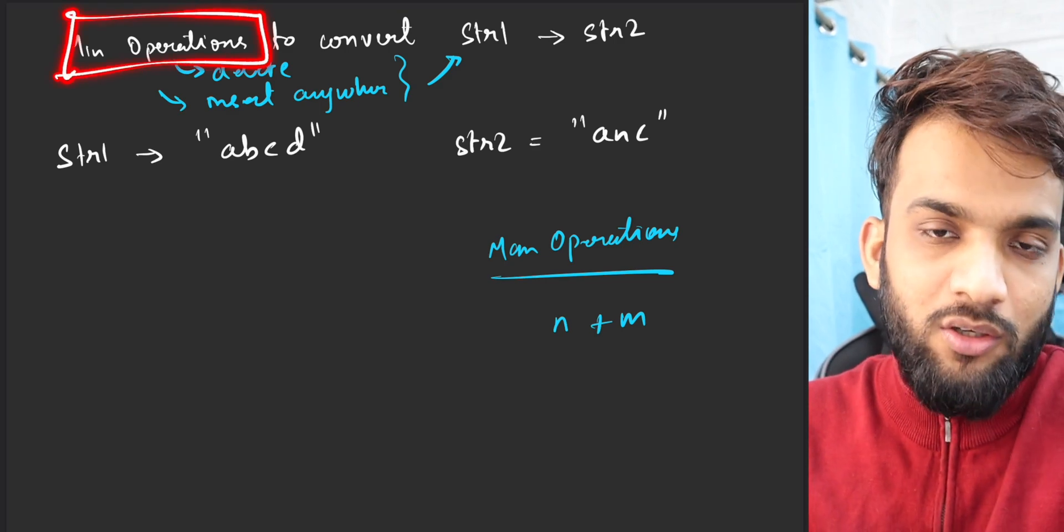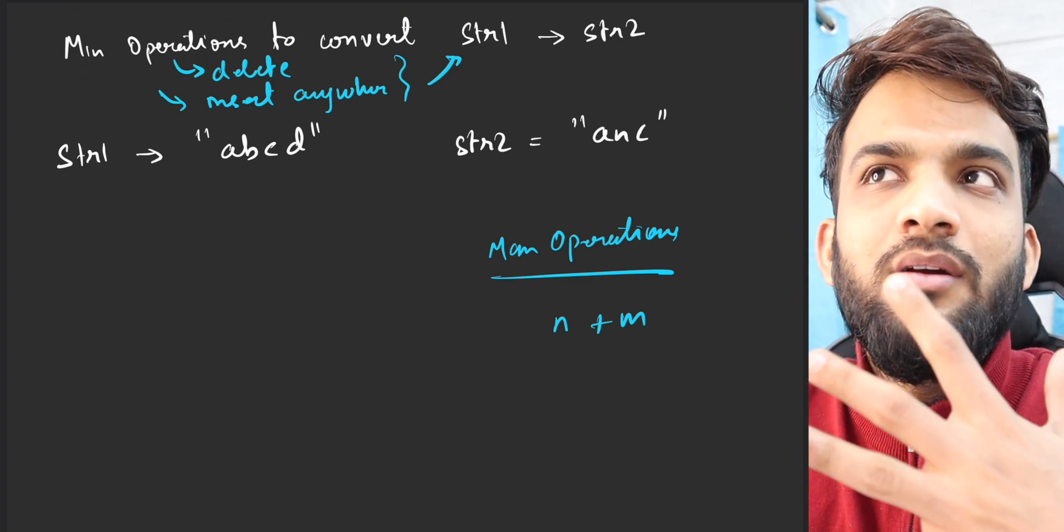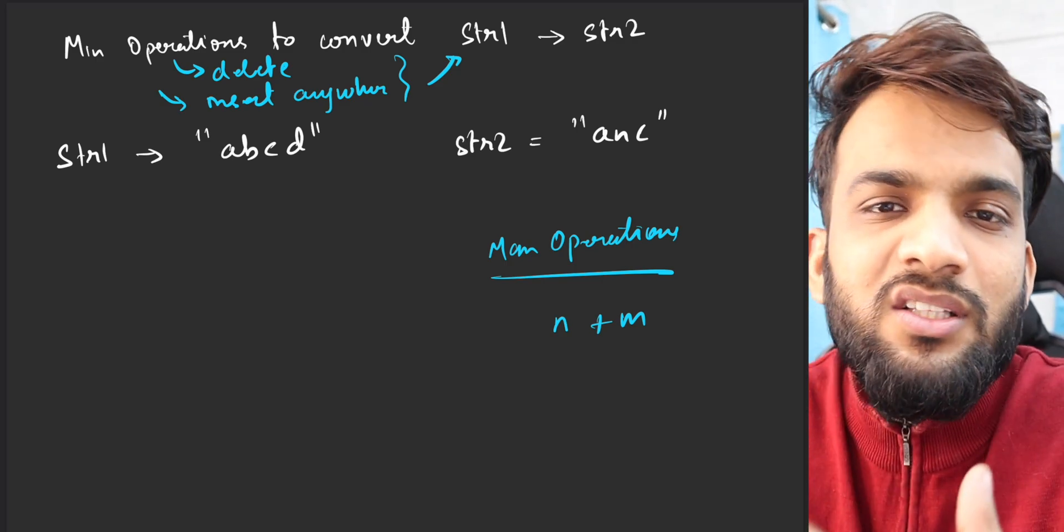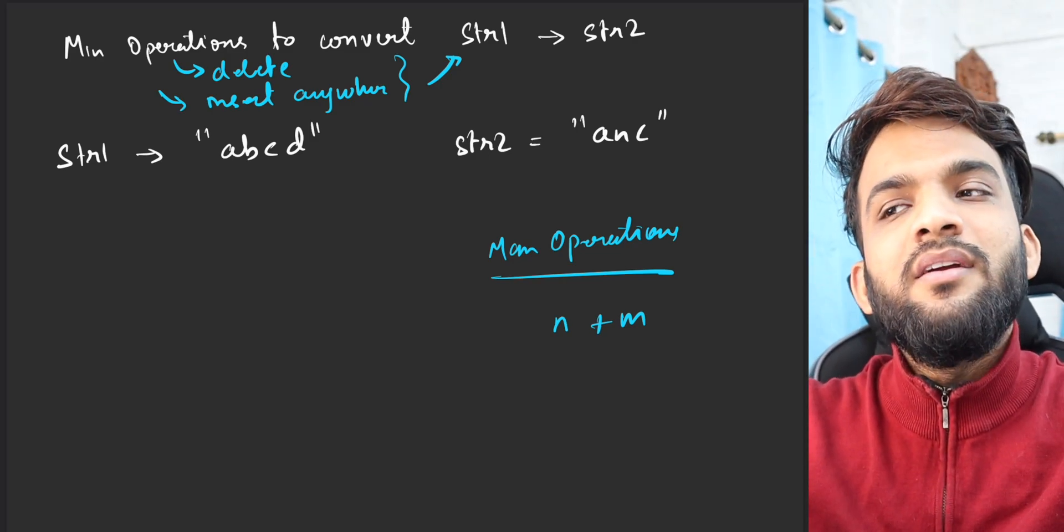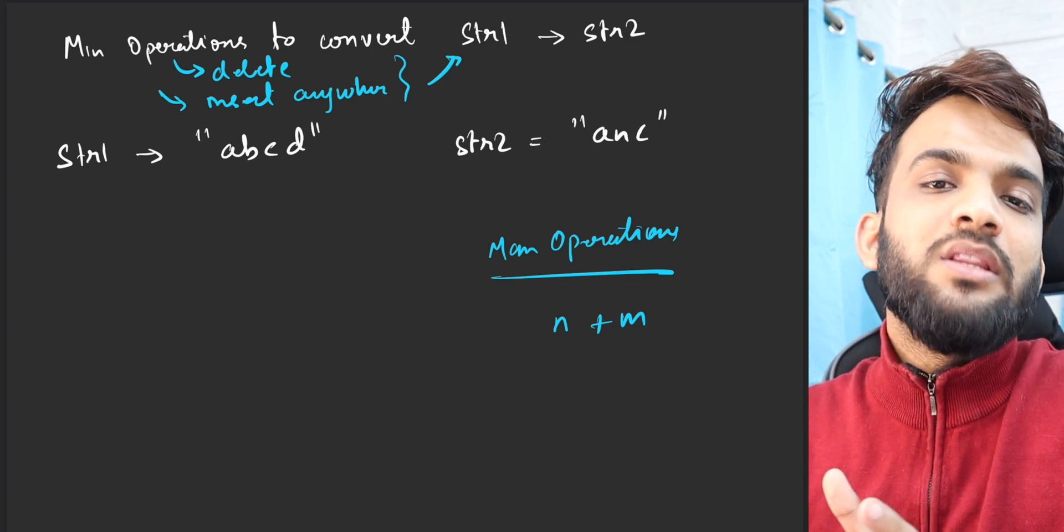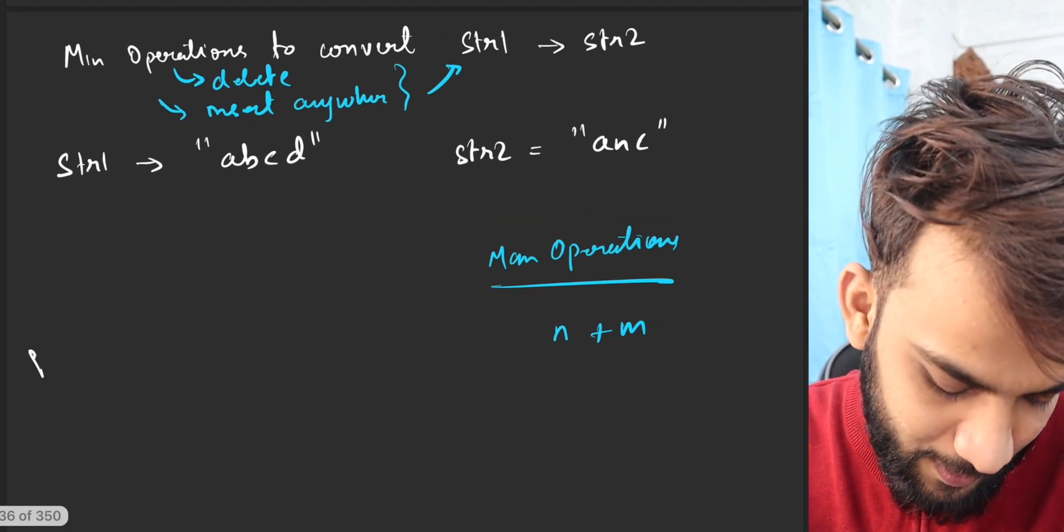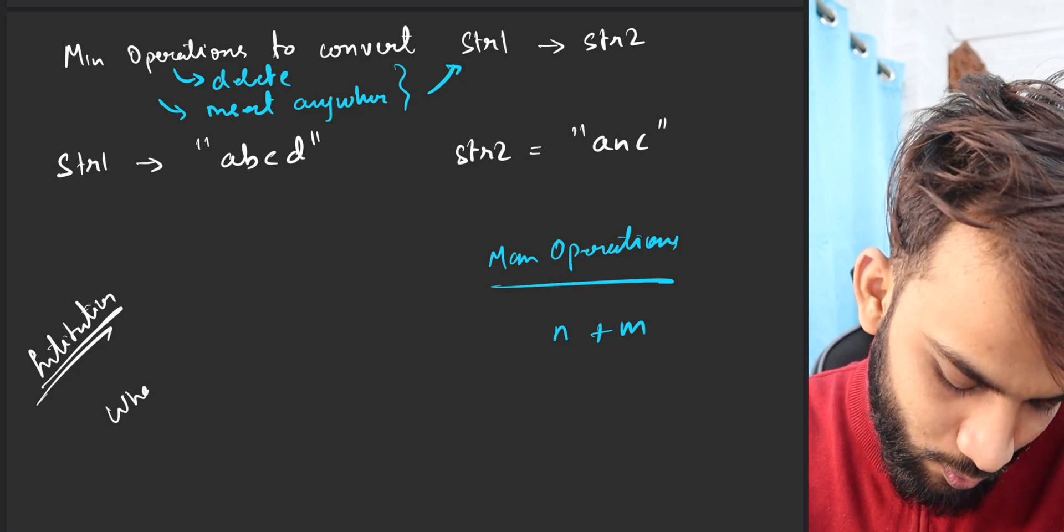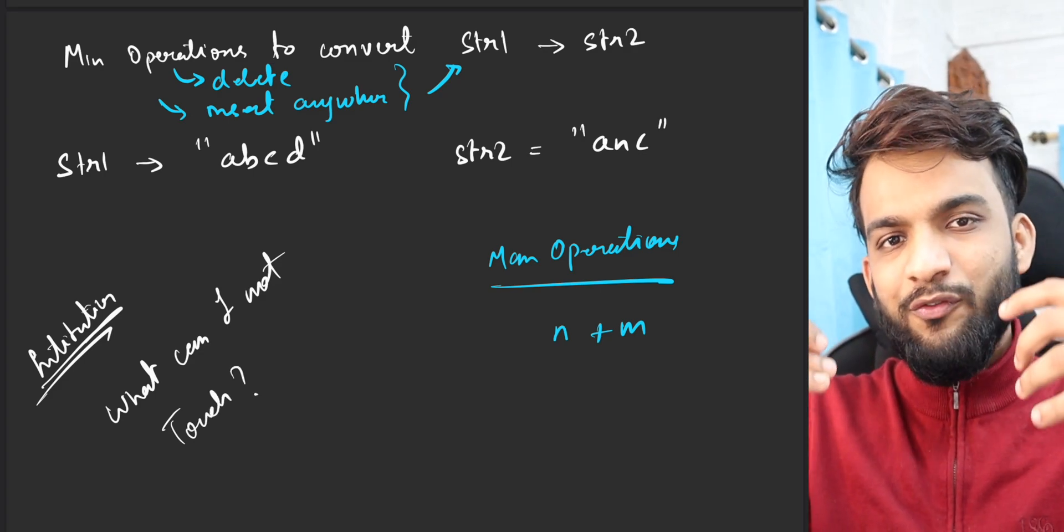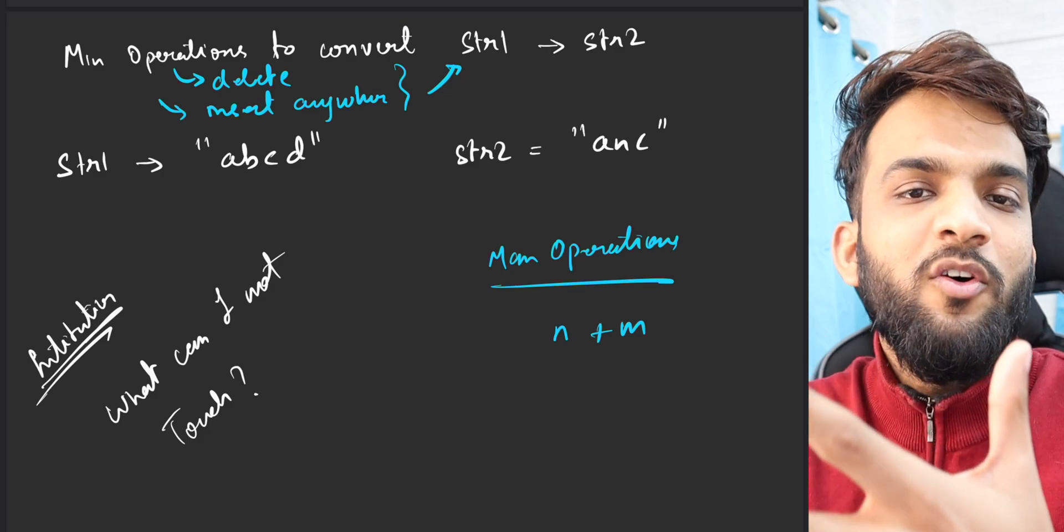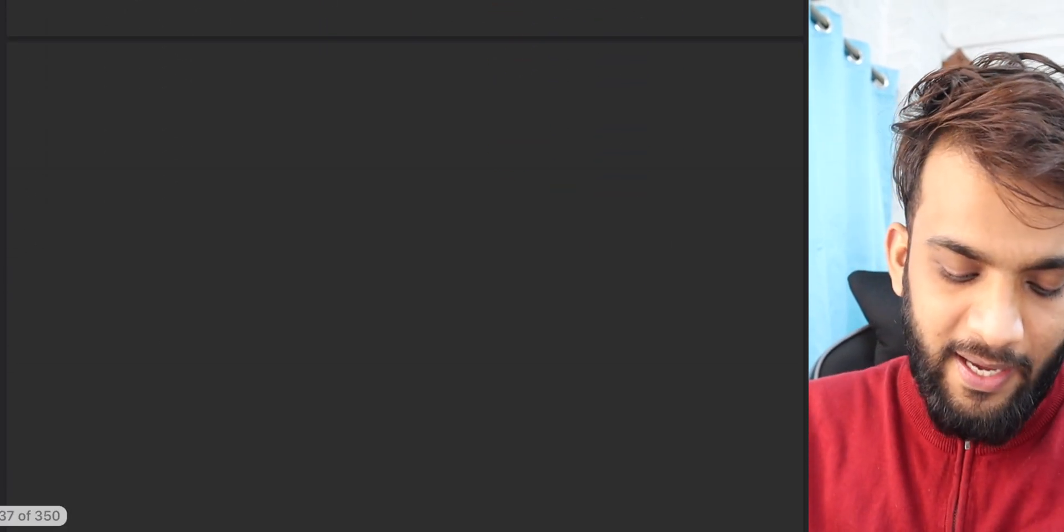Now I need to figure out in what minimum possible way can I do this. Again, whenever something like removal or insertion comes in, my brain starts thinking: what can I not touch? Because ideally, if I touch the minimal things, then the operations will be minimal. So the first intuition that comes up is: what can I not touch? Because if I touch the minimal items, the number of operations will automatically be minimal.